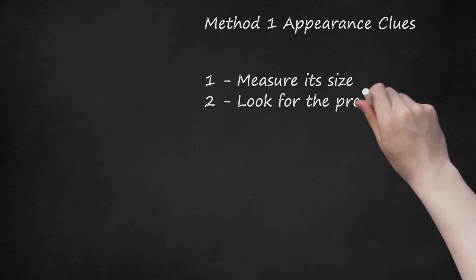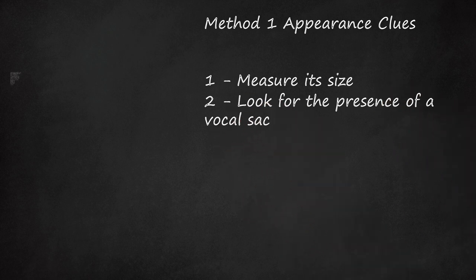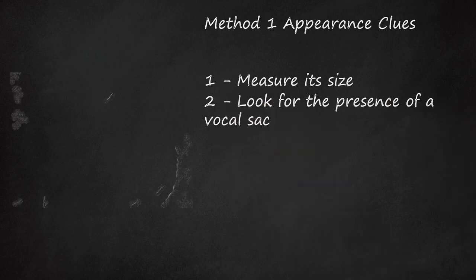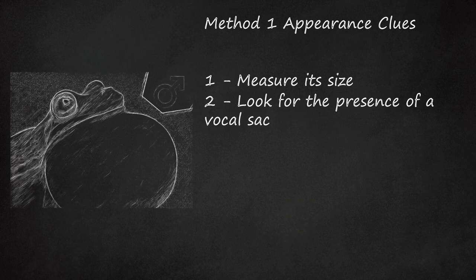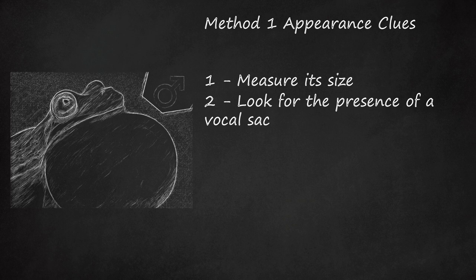Second, look for the presence of a vocal sac. Since male frogs do the vast majority of the croaking, more on this below, they usually have specially constructed throats designed for this purpose. Most male frogs, including tree frogs, have something called a vocal sac on their throats.